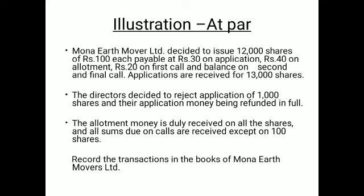The applications received are 13,000, meaning the company offered 12,000 but received 13,000. So 1,000 shares are oversubscribed. To address this, oversubscription condition number 2 is applied — total rejection of the 1,000 oversubscribed applications.